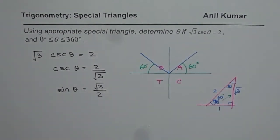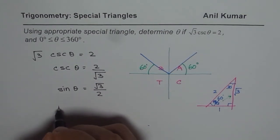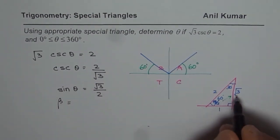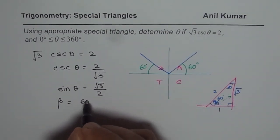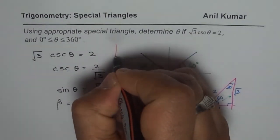So what we get here is that the acute angle, which we normally refer to as angle β, equals 60 degrees. Now, what is θ equal to? The idea here is to always find the related acute angle first.